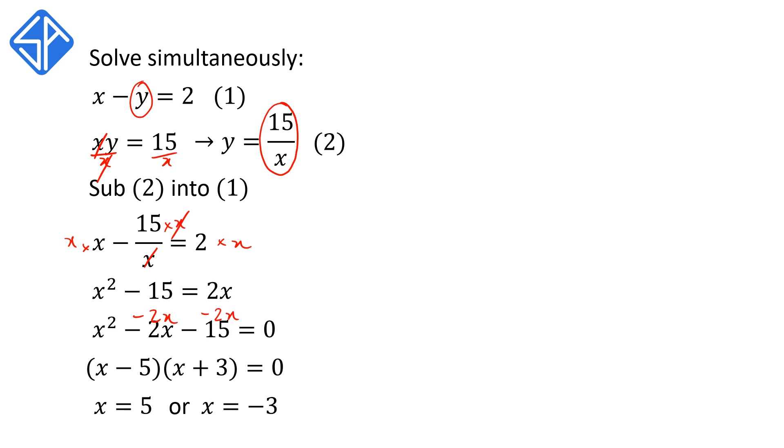Now once you solve for x, we still need to go back and obtain the corresponding values of y. So when x is equal to 5, we can substitute this value of x into any of the equations 1 or 2 and solve for y. But for simplicity, we're just going to substitute into equation 2. So from equation 2, we've got y is equal to 15 on x. Replace the x with 5 and solving this, we get y is equal to 3. So our first set of solution is x is equal to 5 and y is equal to 3.